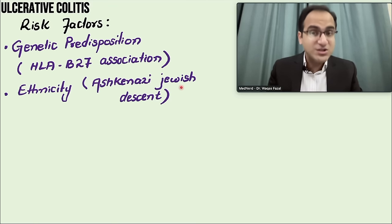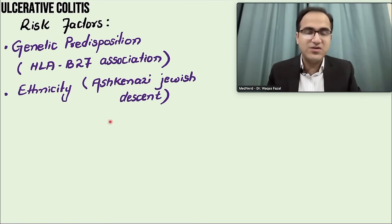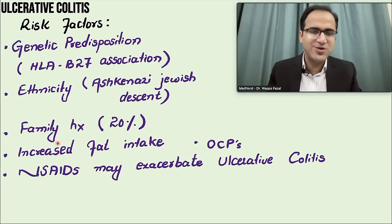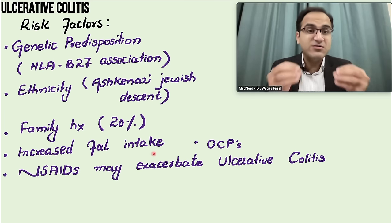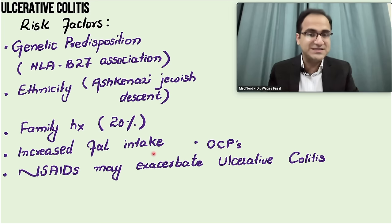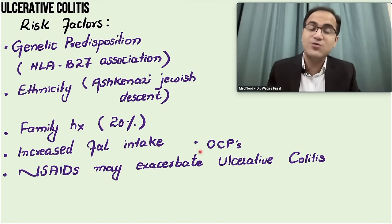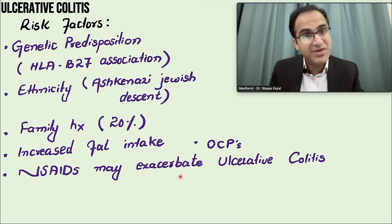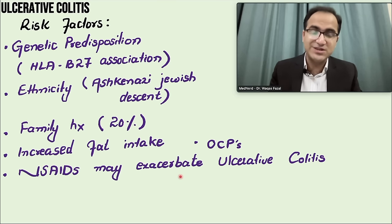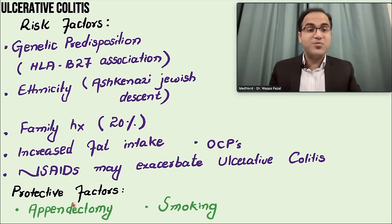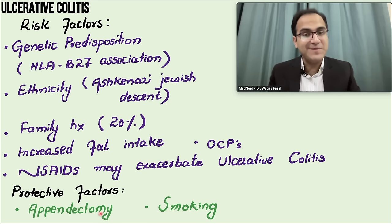Regarding ethnicity, Ashkenazi Jewish descents are most commonly affected. In 20% of patients you will find a family history of ulcerative colitis and GI problems. Increased fat intake can damage the intestine. Oral contraceptive drugs have been seen to cause ulcerative colitis. NSAIDs may exacerbate ulcerative colitis and are usually avoided in these patients.